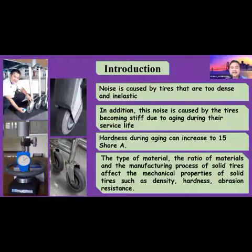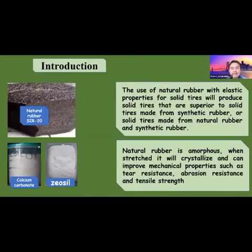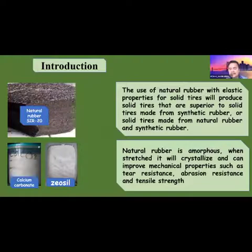This noise is also caused by tires becoming stiff due to aging during their service life. Hardness during aging can increase up to 50%. The type of mechanical properties, the ratio of materials, and the manufacturing process of solid tires affect mechanical properties such as density, hardness, and abrasion resistance. The use of natural rubber for solid tires will produce tires superior to those made from synthetic rubber. Natural rubber, when under stress, will crystallize and can improve mechanical properties such as tear resistance, abrasion resistance, and tensile strength.